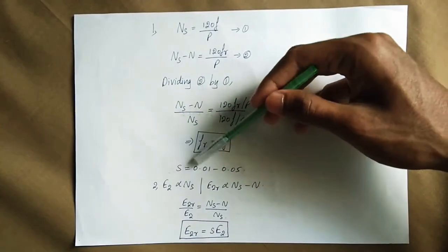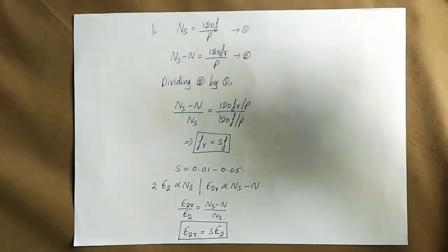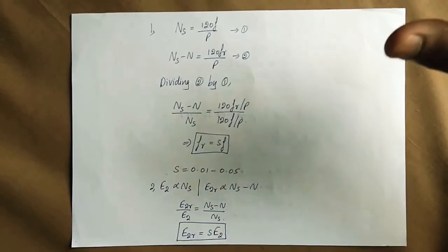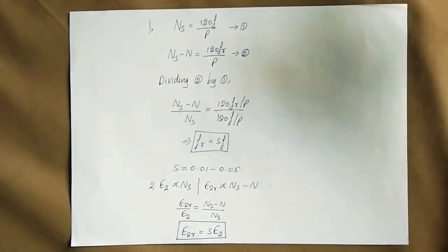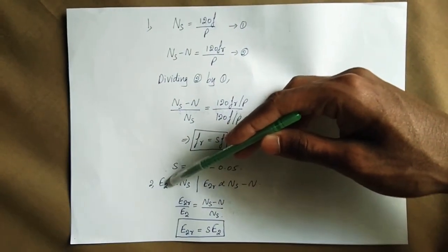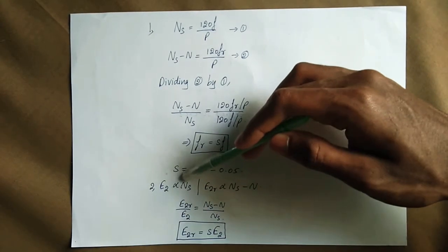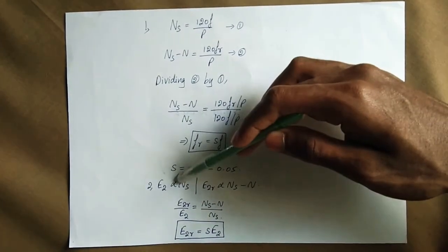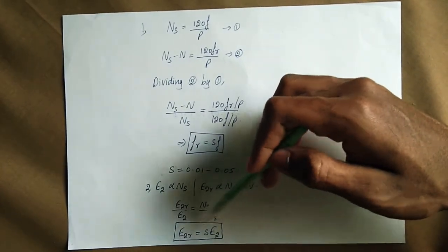At standstill condition, slip S equals 1, so rotor frequency equals supply frequency. Under running condition, slip times the frequency equals the running frequency. Dividing the two equations gives F_bar equal to S times F. Therefore E2R, the running induced EMF of the rotor secondary, equals S into E2.